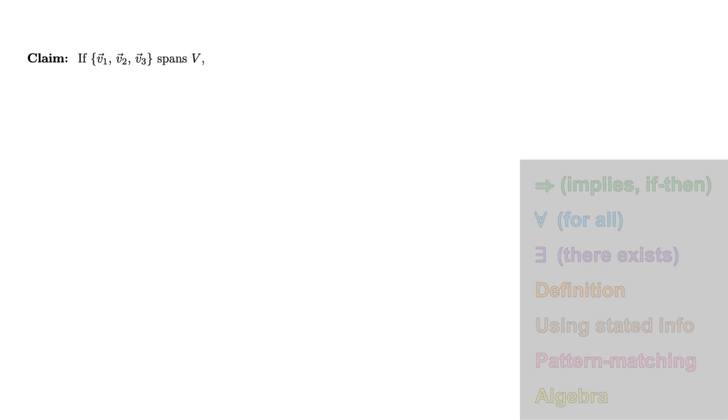The statement we'll prove is that if the collection v1 v2 v3 spans a vector space v, then so does the collection v1 minus 4v2, v2, v3. Let's get started.